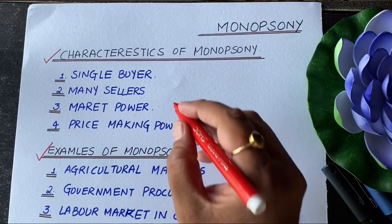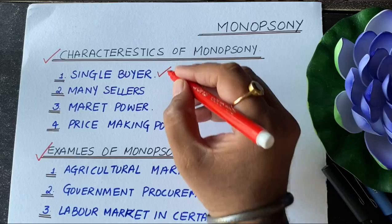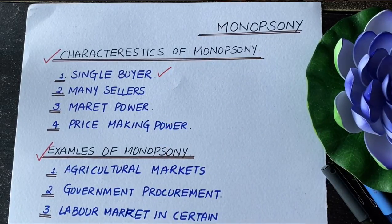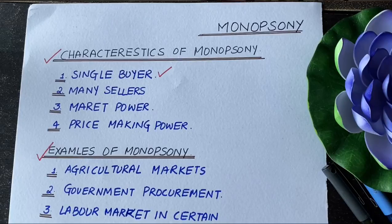Monopsony is a case in which there is only one buyer in the market. There can be many sellers but there is only one buyer. In case of monopoly, there are many buyers but there is only one seller.